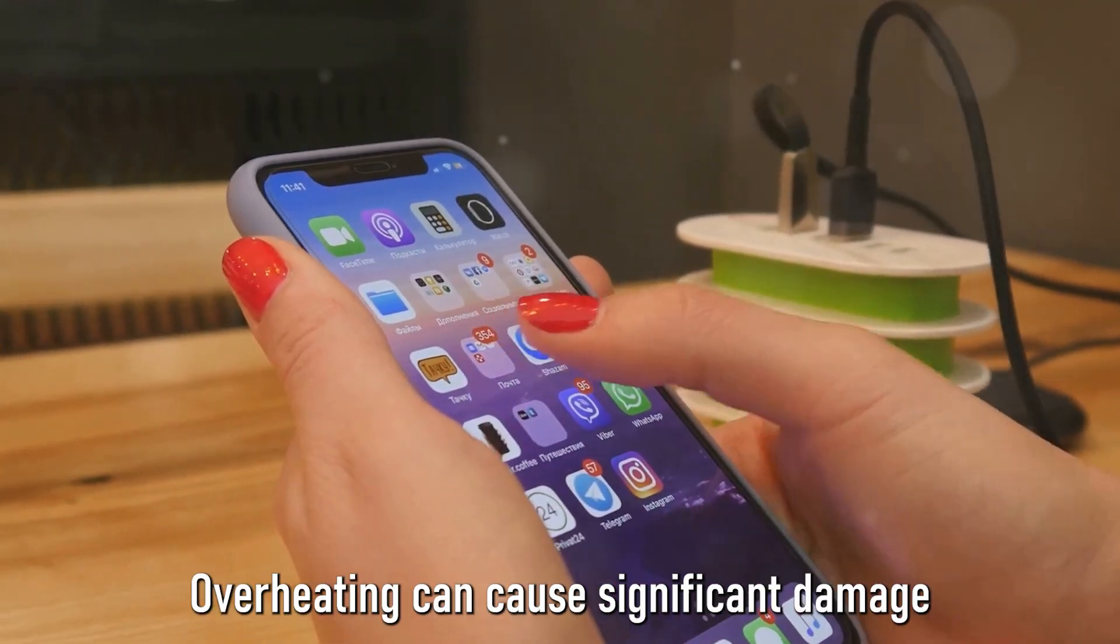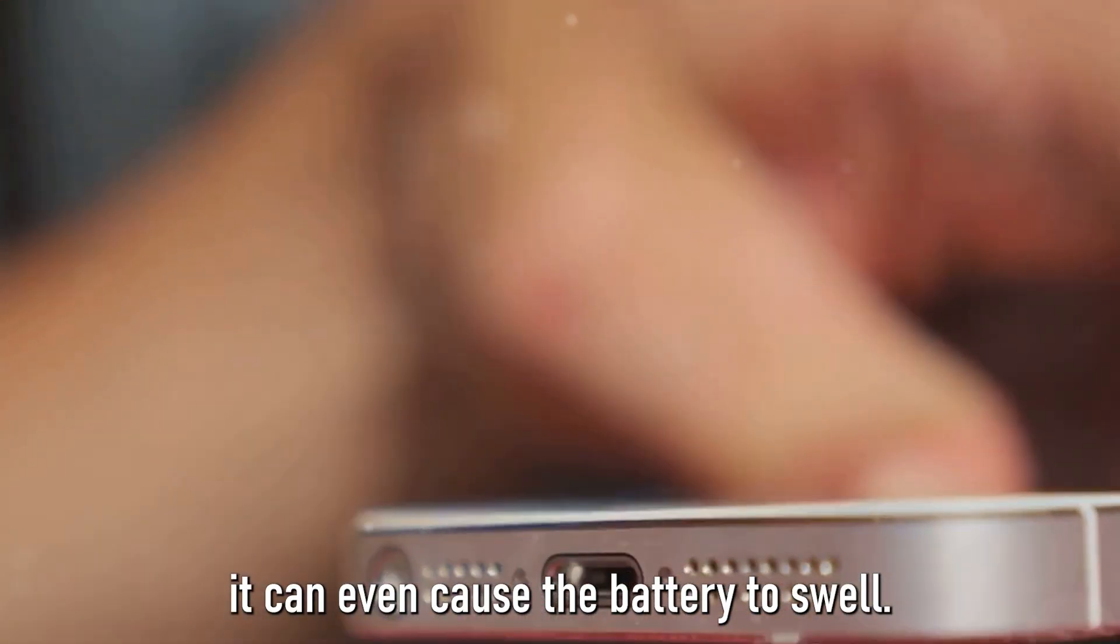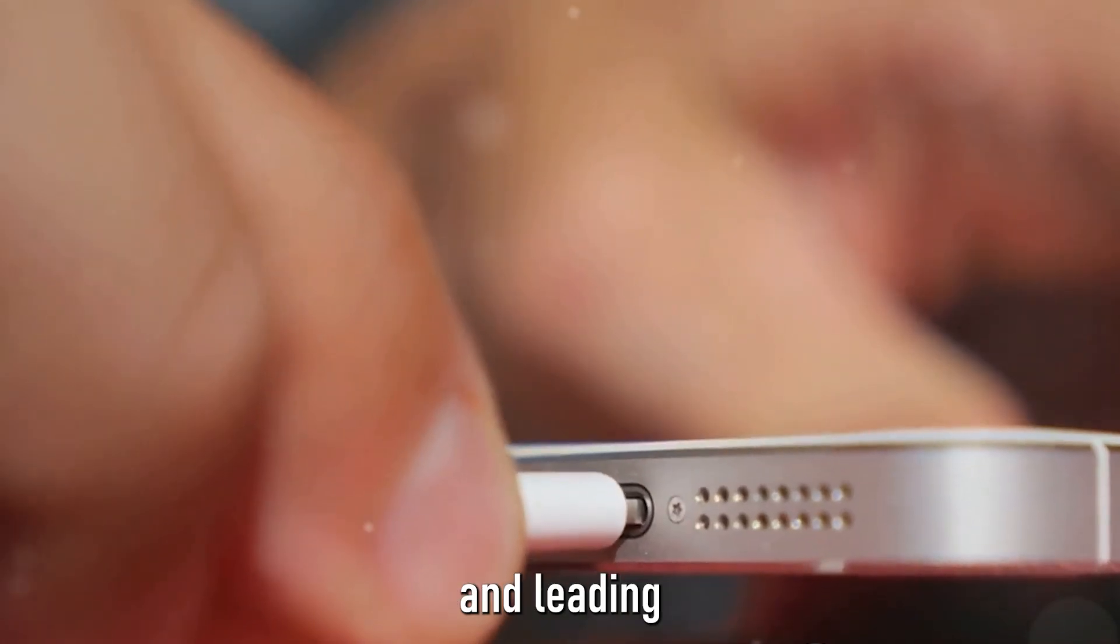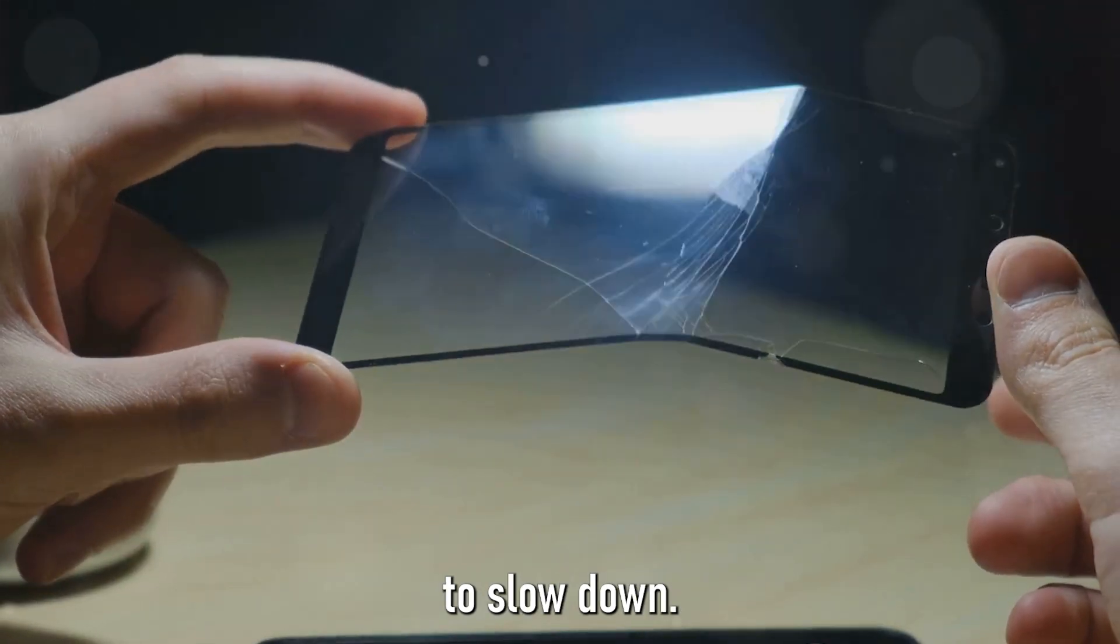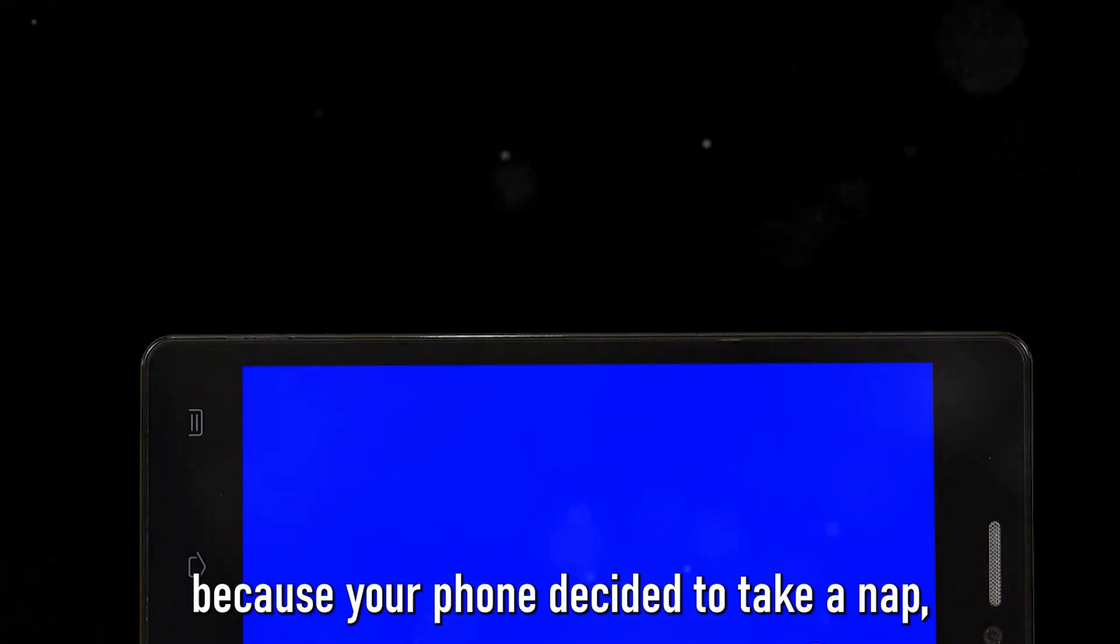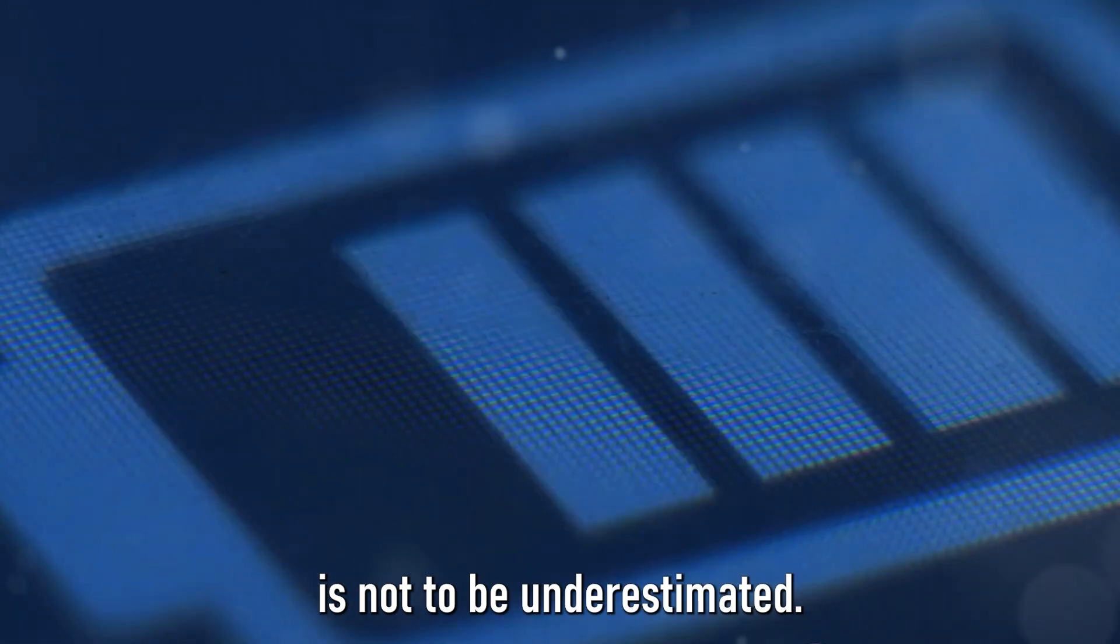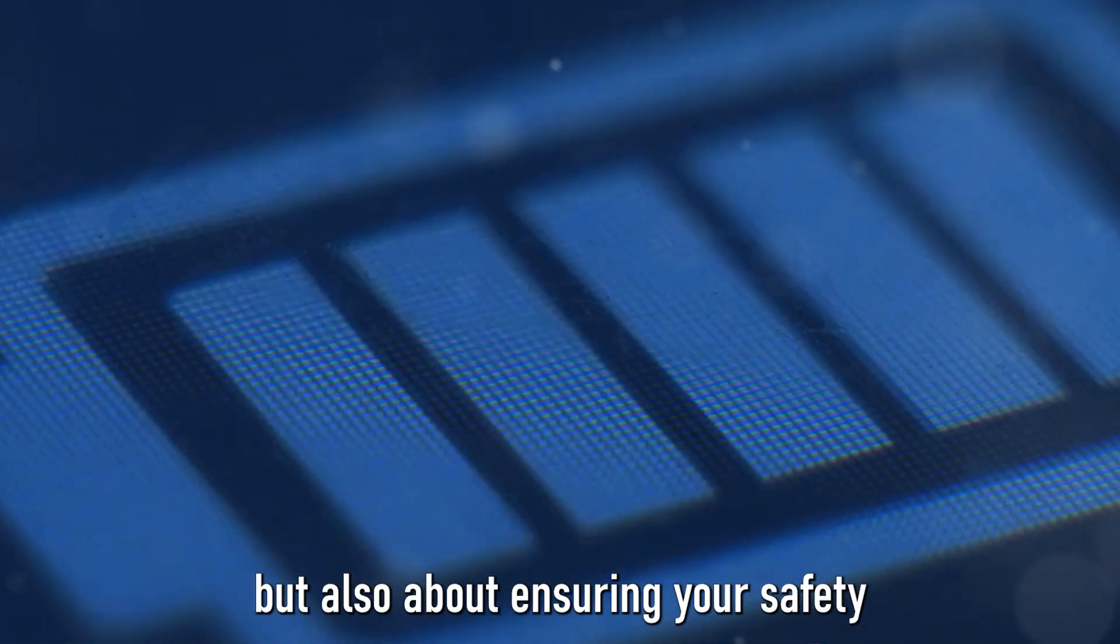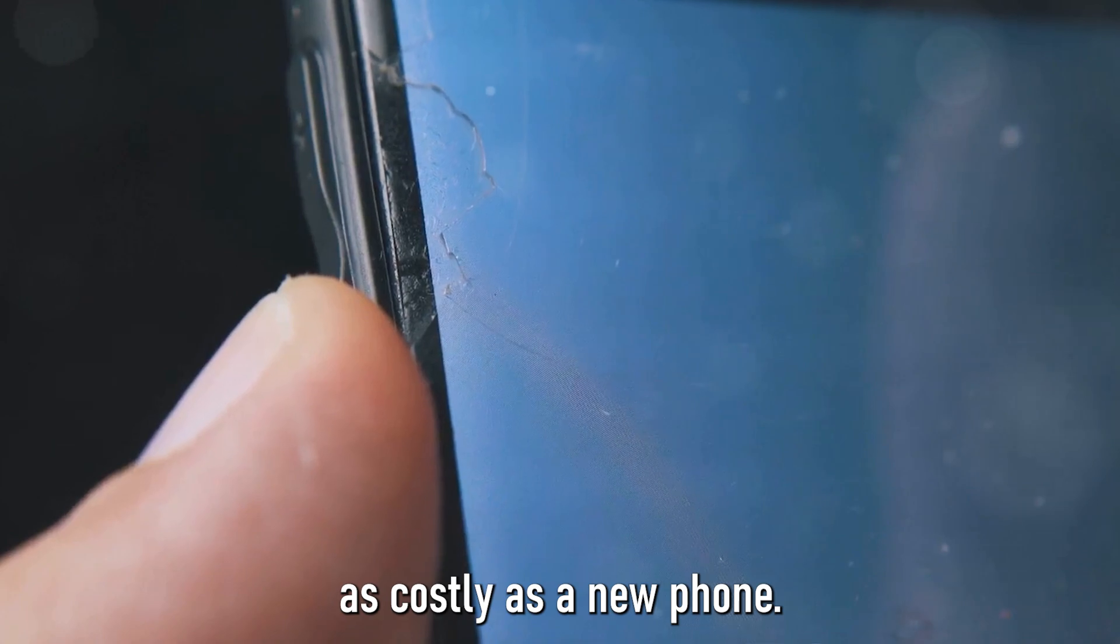Now, let's talk about why this is a problem. Overheating can cause significant damage to your phone's battery. It can shorten the battery life, meaning your phone won't hold a charge for as long. In more severe cases, it can even cause the battery to swell, putting pressure on your phone's internals and leading to potential hardware failure. But it's not just the hardware that suffers. Overheating can cause your phone to slow down, crash or even reset itself. And if you've ever lost unsaved work or an important call because your phone decided to take a nap, you know how frustrating this can be. So next time you feel your phone heating up, think twice before ignoring it. The silent killer of overheating is not to be underestimated. It's not just about protecting your phone, but also about ensuring your safety and the longevity of your device. After all, prevention is better than cure, especially when the cure can be as costly as a new phone.